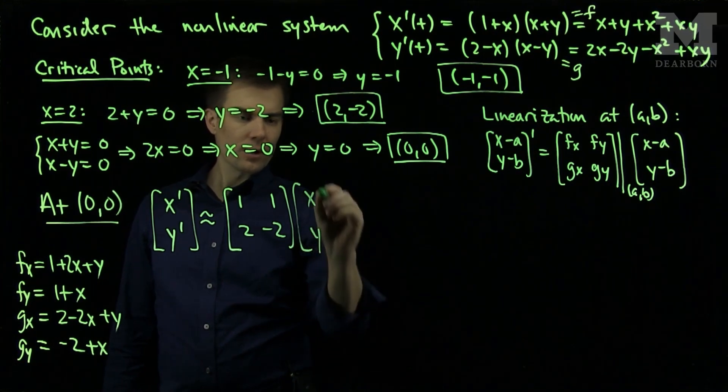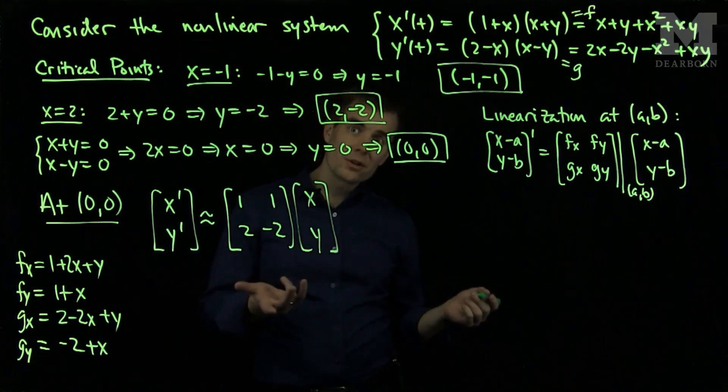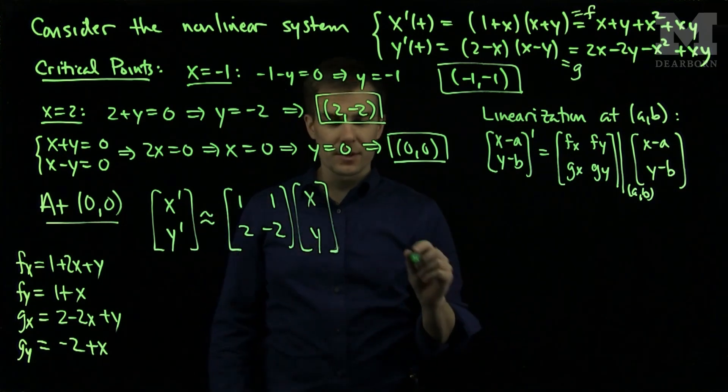So at the origin, my system is approximated by this linear system. To determine the stability, we will compute the eigenvalues of this system.